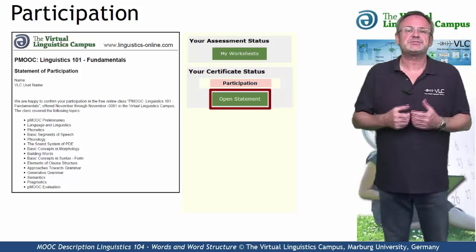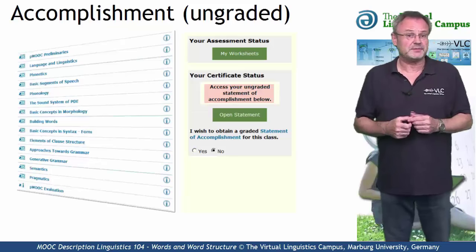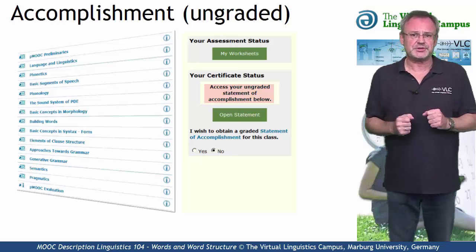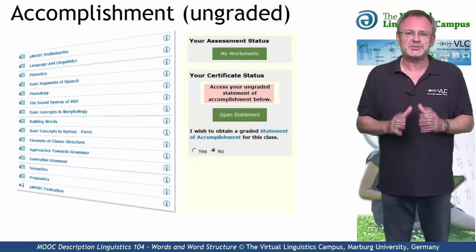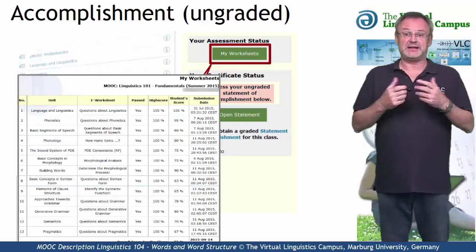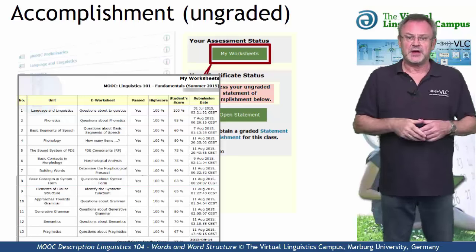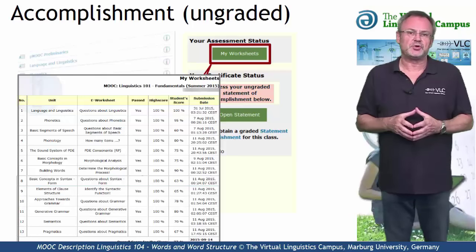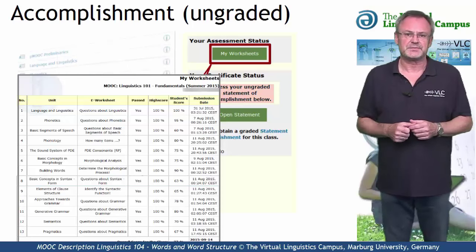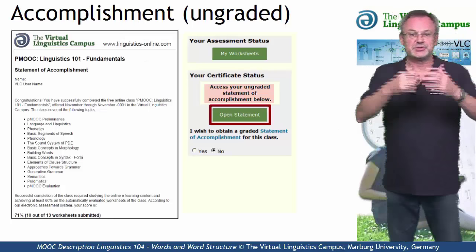The second option is the Statement of Accomplishment, also for free and issued by the Virtual Linguistics Campus. To be given such a certificate, we not only want your regular participation, but we also want you to do the mastery worksheets — our electronic tests — one for each unit. And we want you to achieve an overall score of all the worksheets of at least 60%. A simple click on the Open Statement button and the certificate is yours.